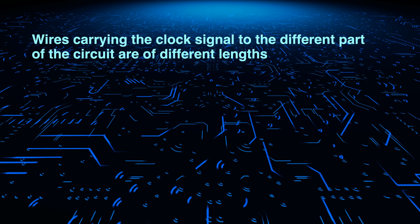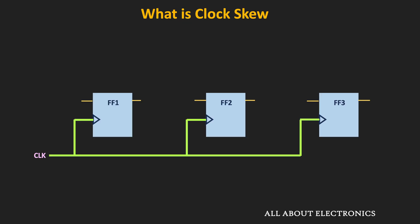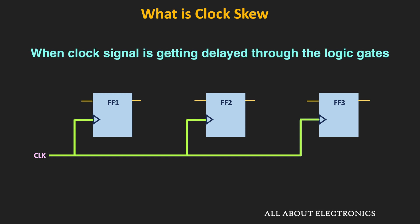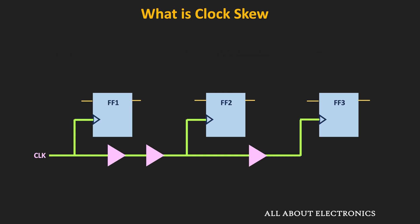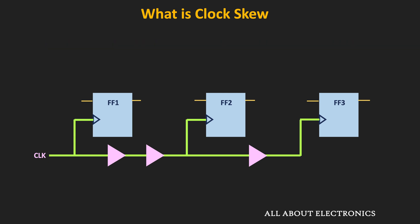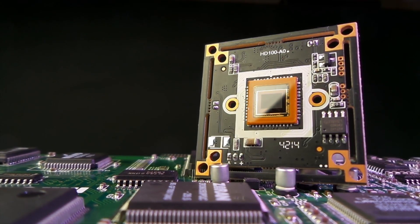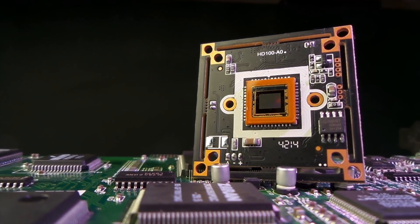Clock skew can happen if the wires carrying the clock signal to different parts of the circuit are of different lengths. Or sometimes, even with short wiring lengths, when the clock signal is delayed through some logic gates, we might also observe clock skew. Apart from that, when different logic gates have different input capacitances, the clock signal may arrive a little late through gates with higher input capacitance. These are some of the reasons for clock skew, which is particularly an issue in very large circuits or when the clock frequency is very high.